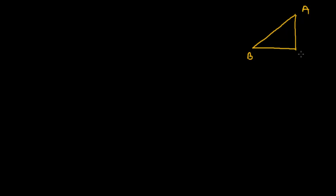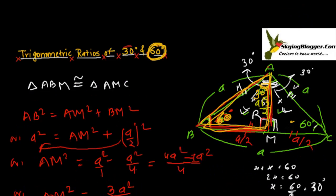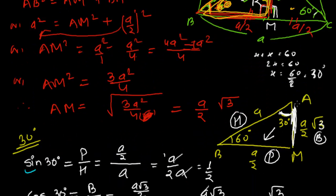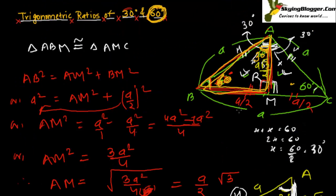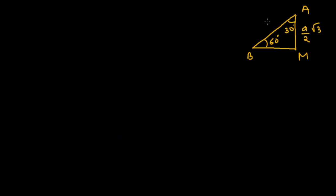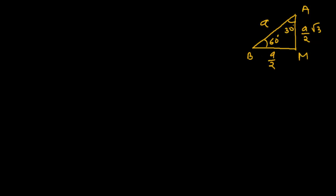This is A, this is B, and this is M. This angle was 30 degrees and this was 60 degrees. The value of AM we found out was A upon 2 root 3. So AM is A upon 2 root 3, AB is A, and BM is A upon 2. Now what we are going to find out is all the ratios for 60 degrees.